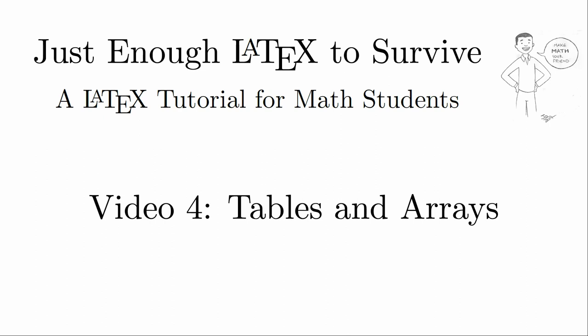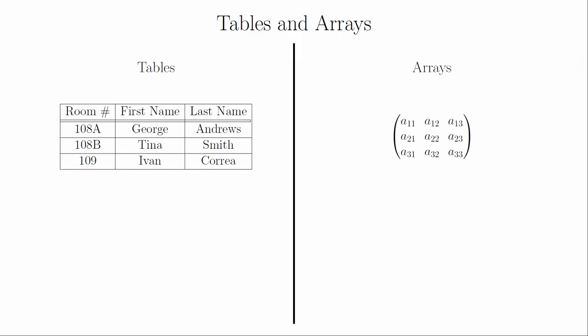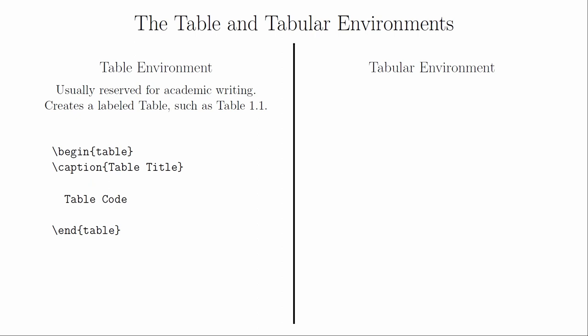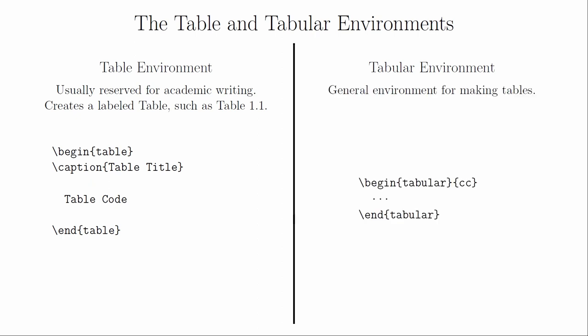In this video, we're going to look at two very similar and fairly common constructions in LaTeX: tables and arrays. Both tables and arrays are structured environments with well-defined rows and columns. The primary difference is that arrays are mathematical objects, whereas tables are text-based. There is an unfortunate naming convention — there is a table environment used in academic writing, and then there is a tabular environment which is usually used to make a table. Within the table environment, the table is actually constructed using a tabular environment. When people talk about making a table in LaTeX, they are usually referring to a tabular environment.